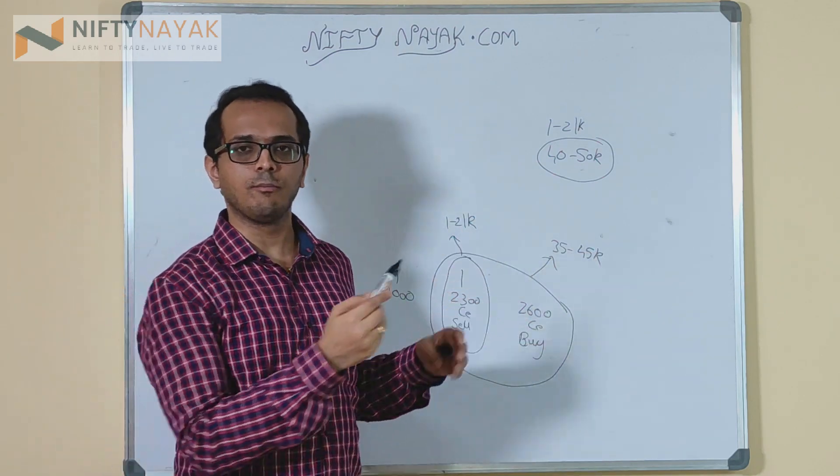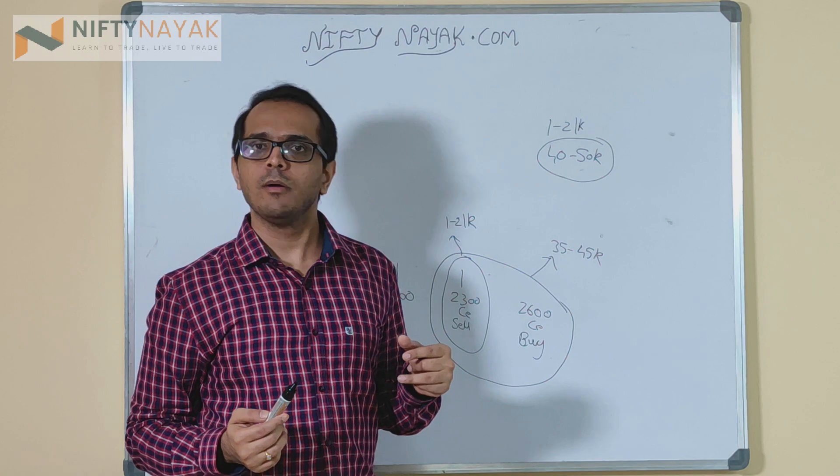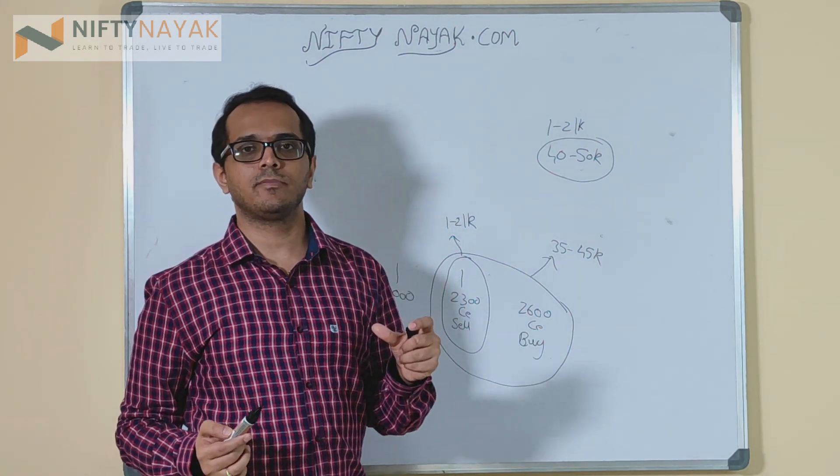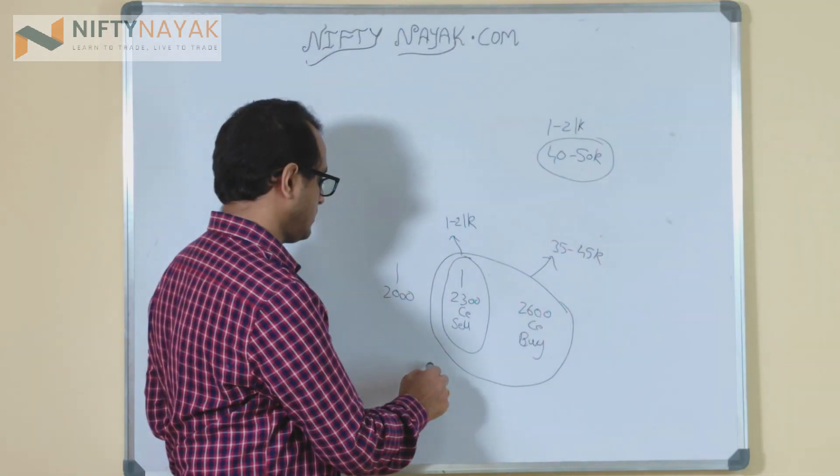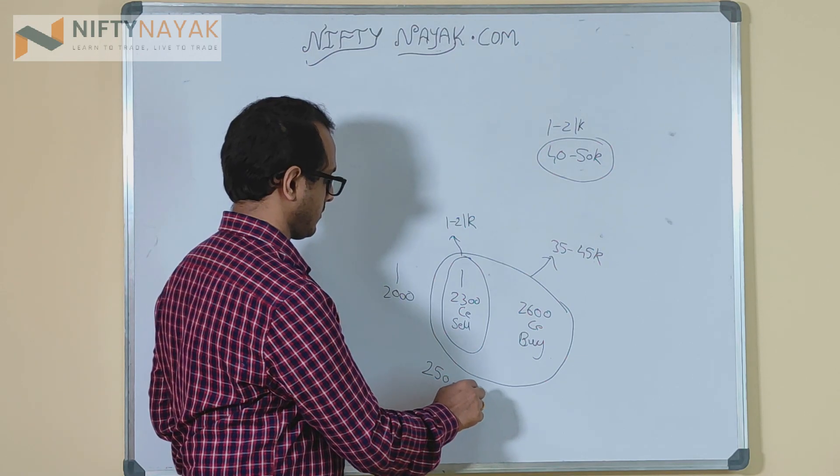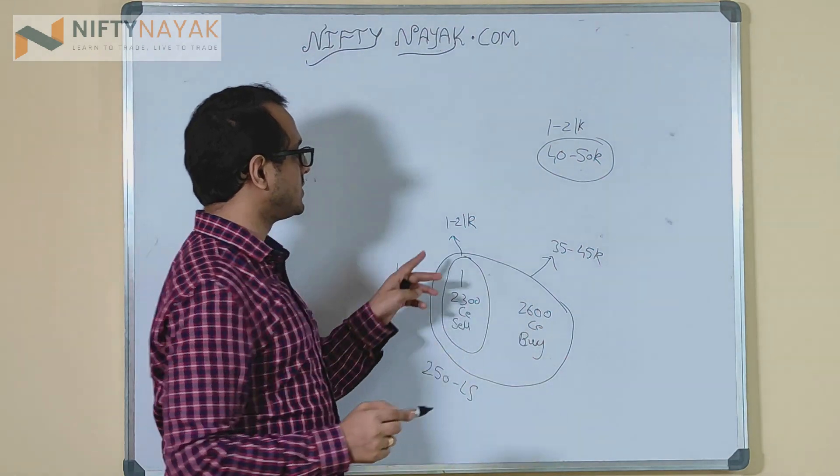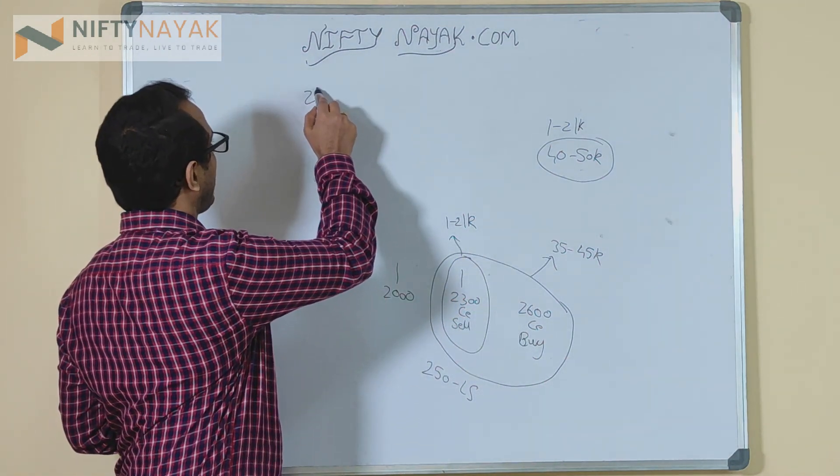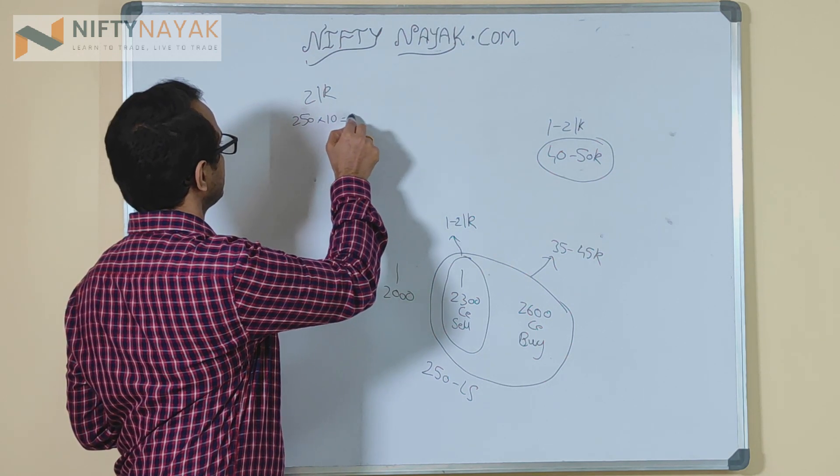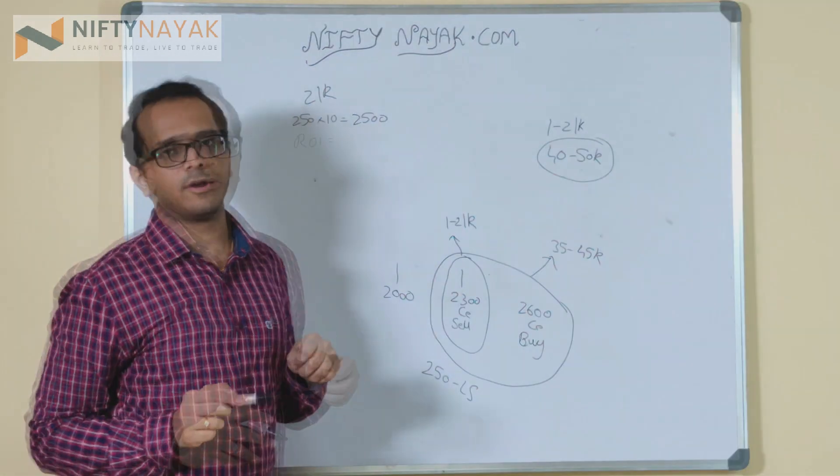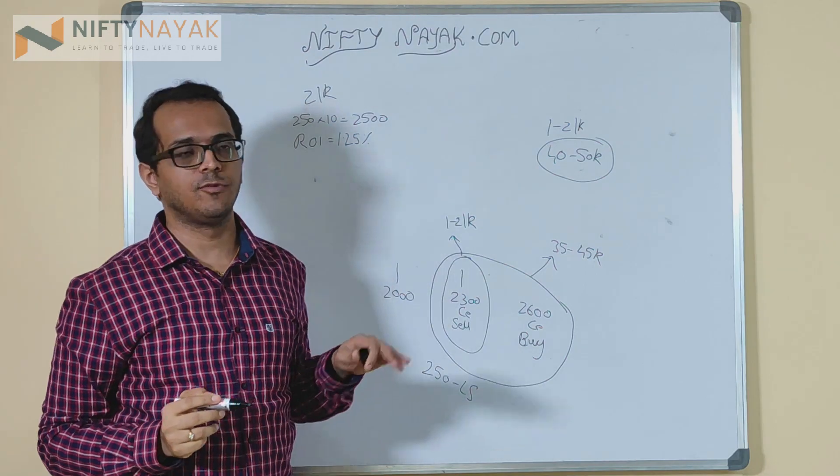For this combined trade, you will be paying just 35 to 45 thousand. You will have to check the margin with the broker. Your margin has gone down drastically to one third, but obviously your profit also will go down drastically. But the return on your investment can increase. Let's say Reliance lot size is 250. If you have sold 2300 option for let's say 10 rupees, if you have executed just this trade, then for your two lakh capital if you make a profit, you will be making a profit of 250 into 10 which is 2500. So the ROI in this case is going to be 1.25 percent on your capital.